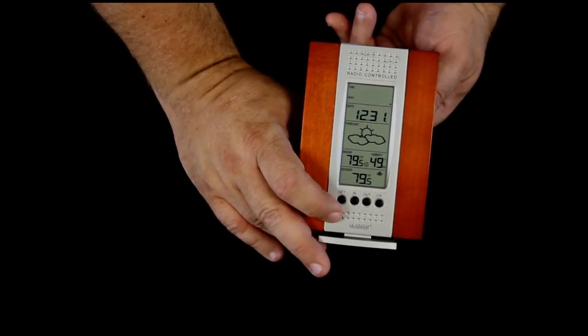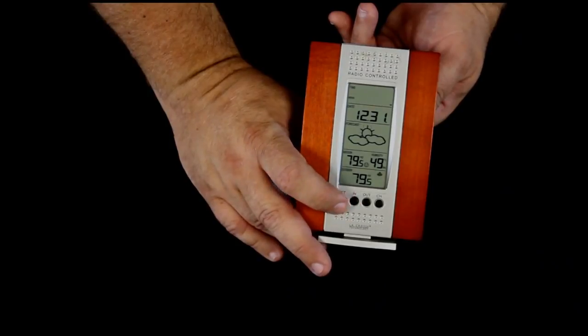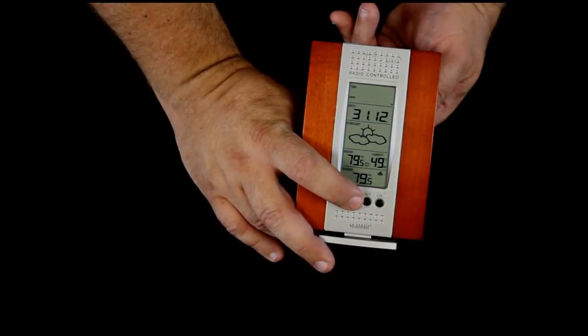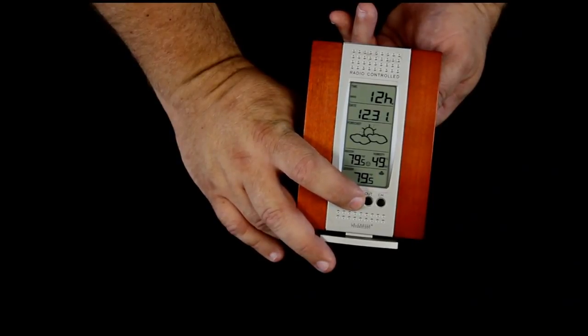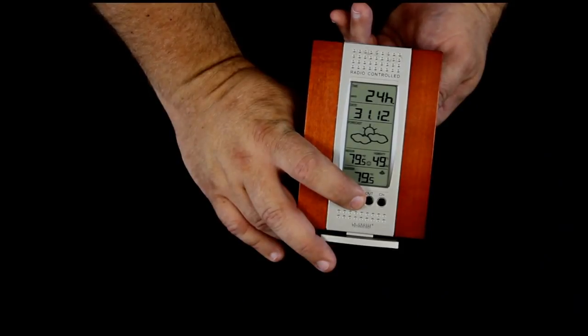Pressing the set button again gives us the option of 12 or 24 hour clock, and that changes with the in button. Notice when we go to 24 hour clock, our date is displayed differently. Instead of month and day, it goes to day and month.